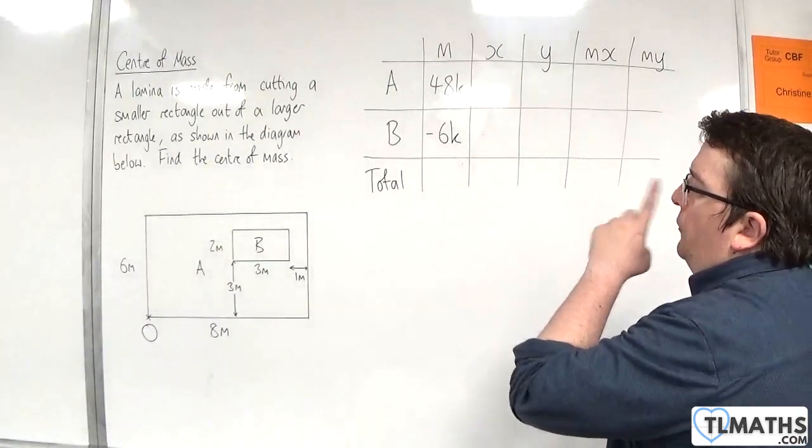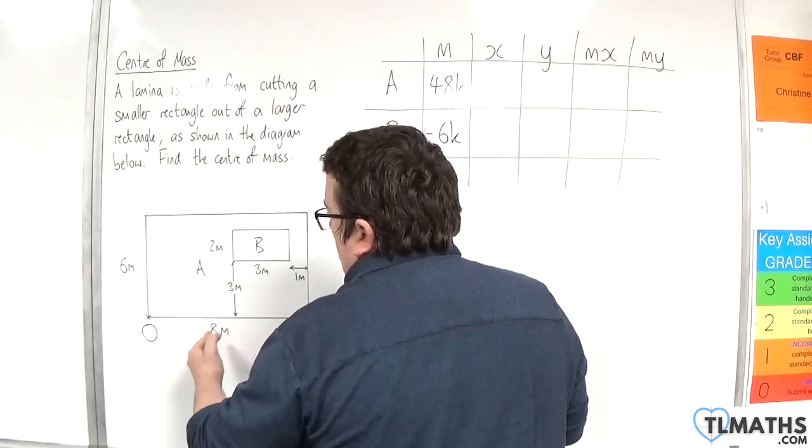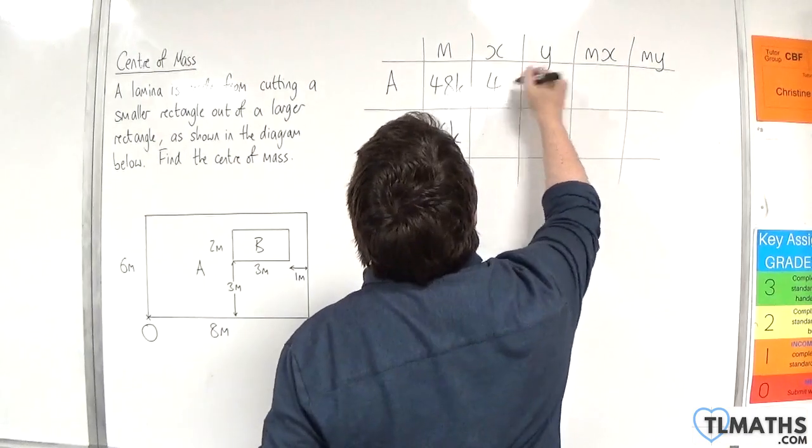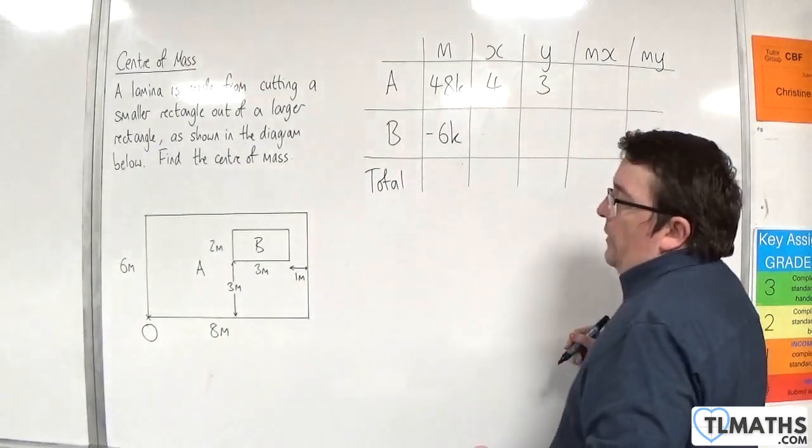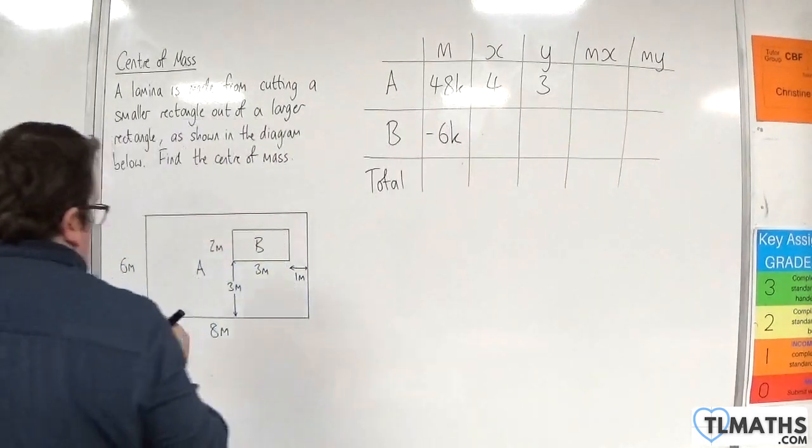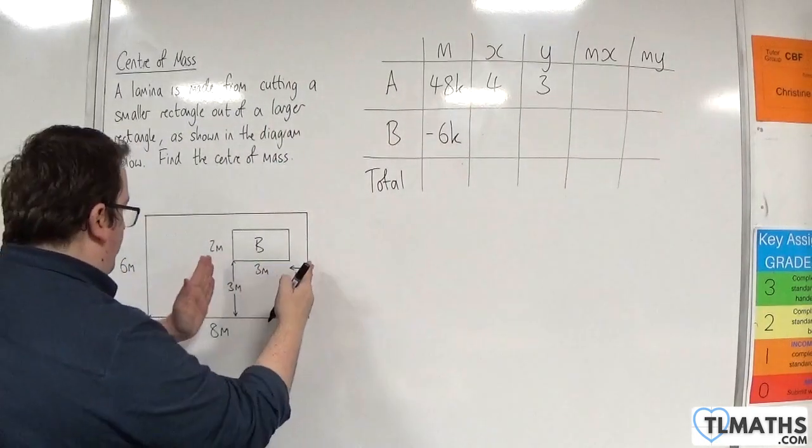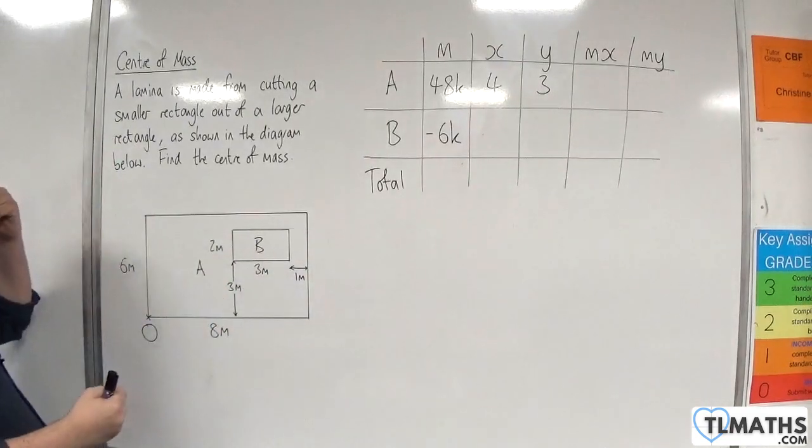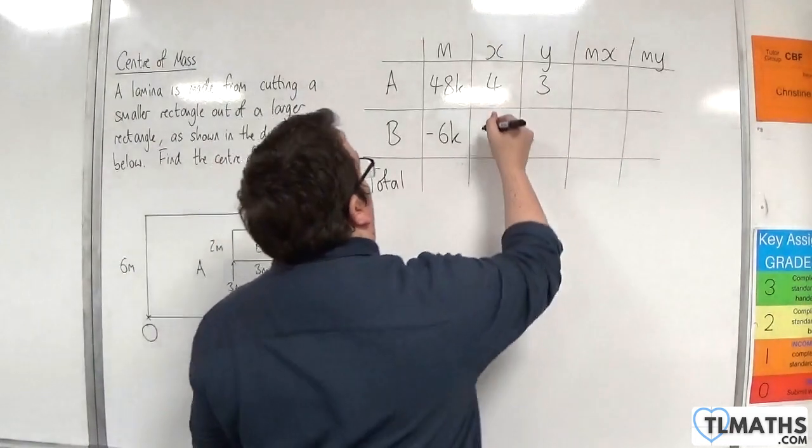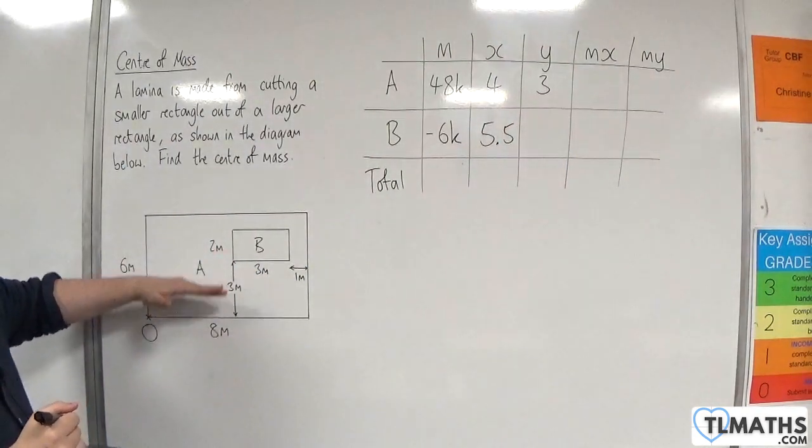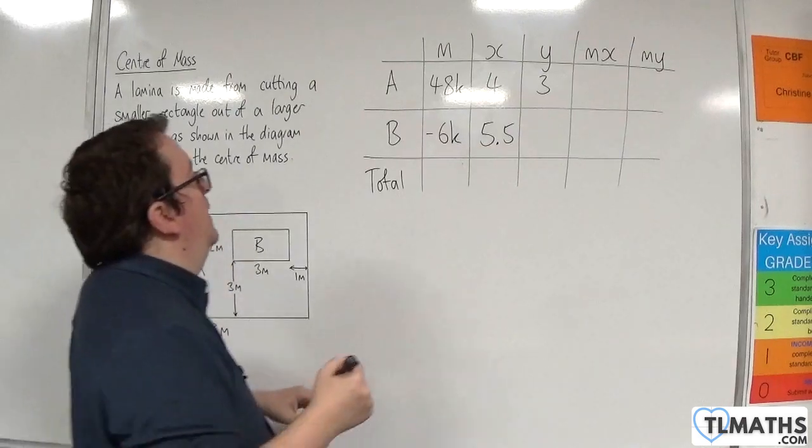Now, the centre of mass of A is at 4 metres along 3 metres up, so 4, 3. And the centre of mass of B, well, that's 4 metres. So, 4 metres plus 1.5, so 5.5 will be the X. And the Y, we are 3 metres up, plus 1, so 4 metres.